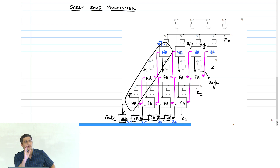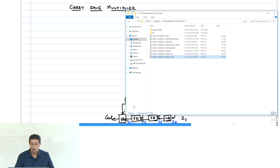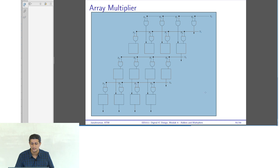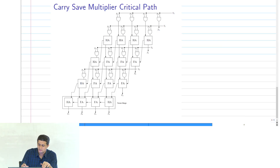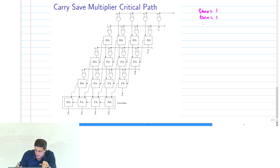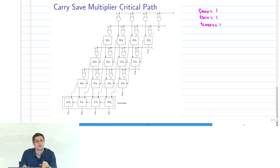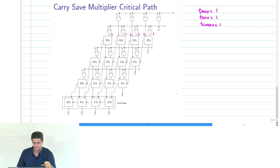Any other questions on the carry-save multiplier construction? Now we will go ahead and do the critical path analysis. We use T_AND = 1, T_sum = 1, T_carry = 1 as an example. The arrival times at the outputs of all AND gates is 1, so the first row of partial products all have arrival time 1.